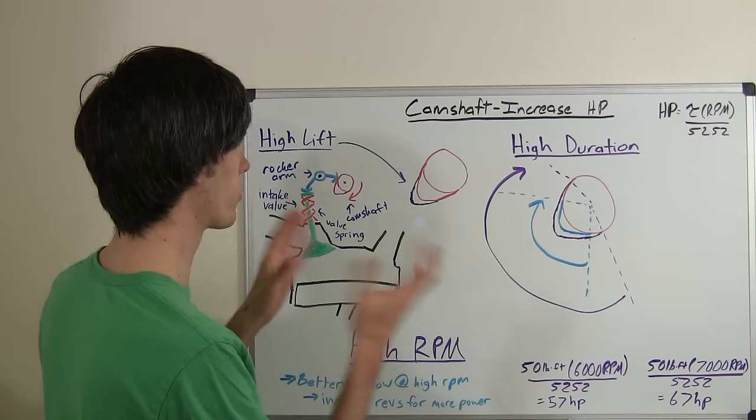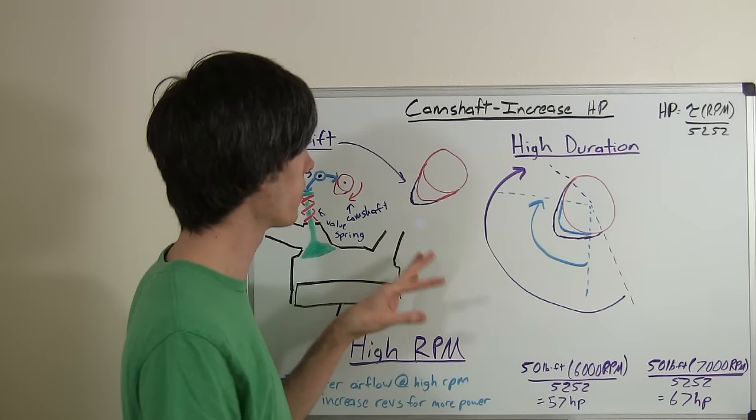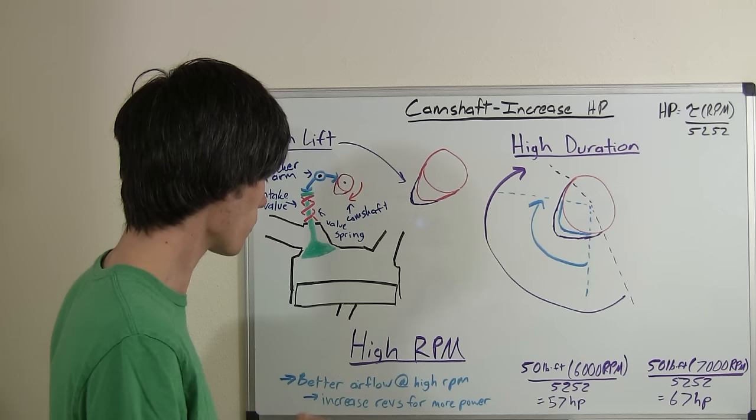So basically before, you couldn't do this because you wouldn't have had good enough airflow above 6,000 RPM. But now that you've put in this camshaft with high lift, high duration, at high RPMs, you're going to have more airflow. And so with better airflow at high RPMs, you increase your revs for more power.